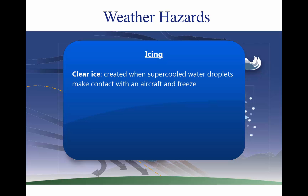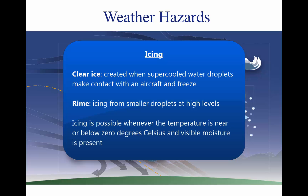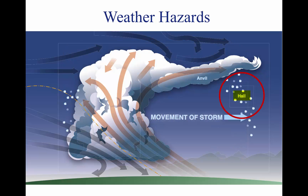But at high levels, icing from smaller droplets may be rime, or mixed rime and clear ice. Thunderstorms are not the only area where pilots could encounter icing conditions — pilots should be alert for icing any time the temperature approaches zero degrees Celsius and visible moisture is present. Hail competes with turbulence as the greatest thunderstorm hazard to aircraft. Possible hail should be anticipated with any thunderstorm, especially beneath the anvil of a large cumulonimbus.